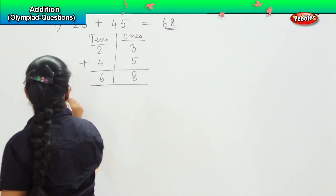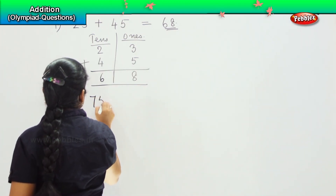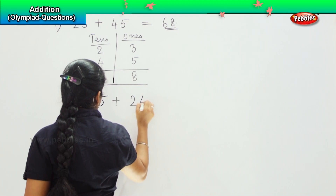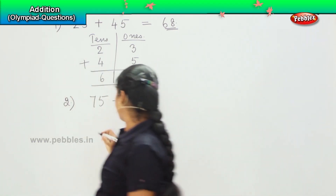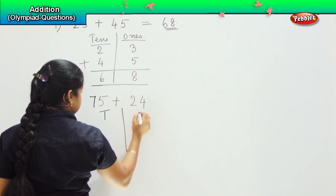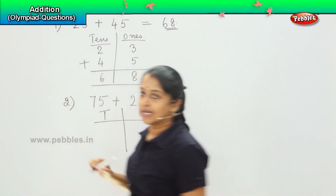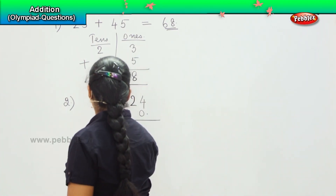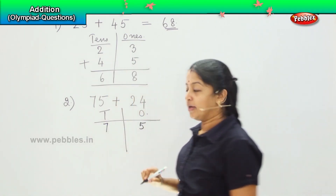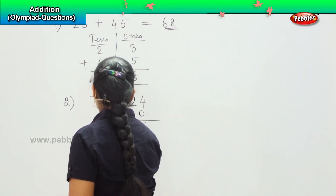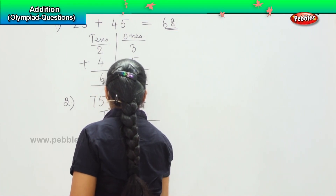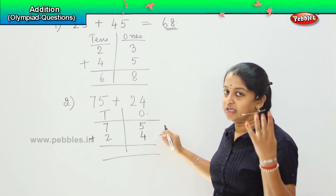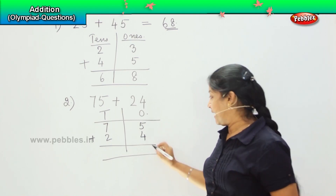Here is your next sum: 75 plus 24. So, what is the first step? From here on, children, I will be writing it as T and O, because it is understood that T is tens and O is ones. So, 75 can be written as 7 tens, 5 ones. 24 can be written as 2 tens and 4 ones. After that you need to count. 5 plus 4: 5 in the mind, 4 on the fingers — after 5: 6, 7, 8 and 9.